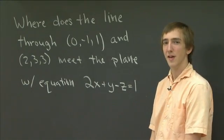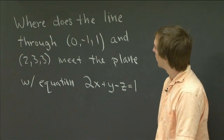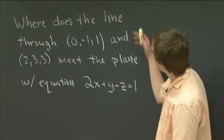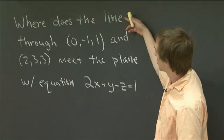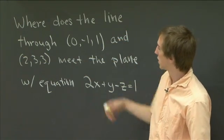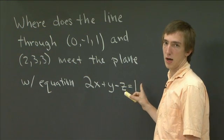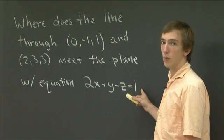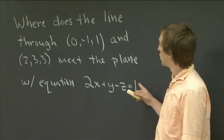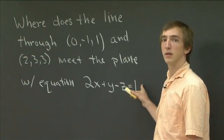Hello, and welcome back to recitation. The problem I'd like to work with you right now is we have a line which goes through two points that are given to us explicitly, and we have a plane which is given to us by an equation. And what we want to know is, where does this line intersect this plane?